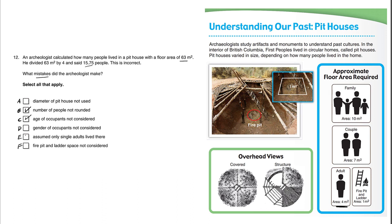Choice E is similar to Choice C — assumed only single adults live there. That's exactly what we've been talking about, so this is also a correct mistake.